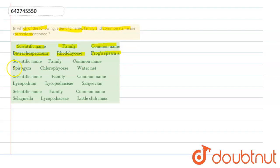Getting further is Spirogyra, then is Chlorophyceae, then is water net. Then is Lycopodium, then is Lycopodiaceae and common name is Sanjeevani. Then is Selaginella, then is Lycopodiaceae and Little Club Moss.